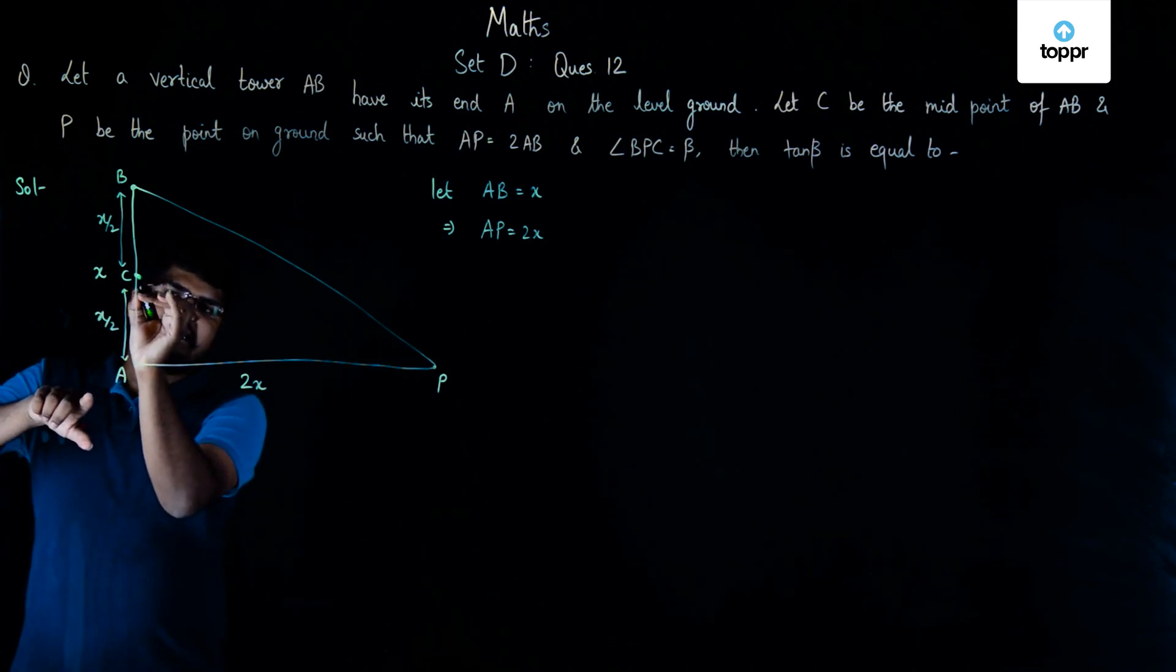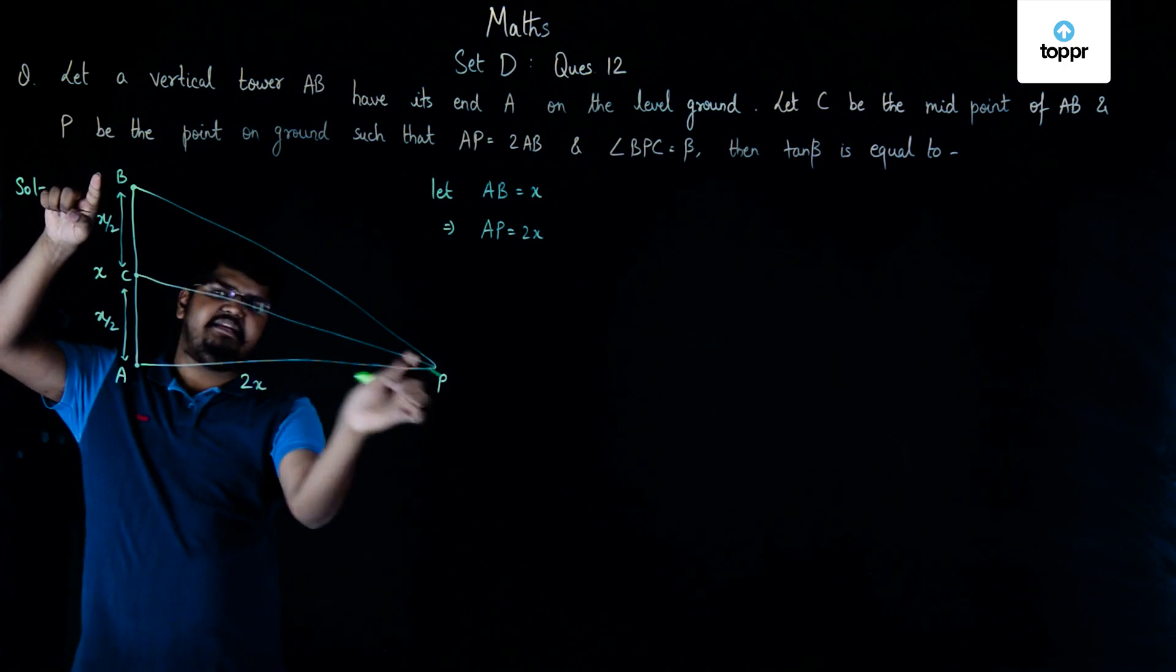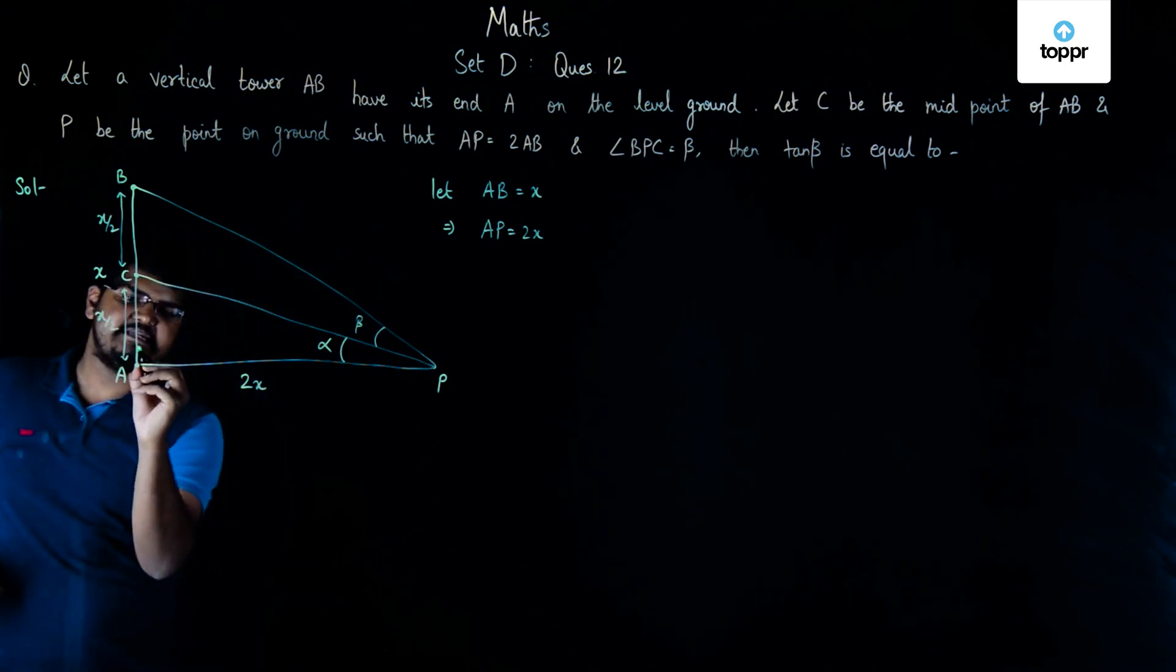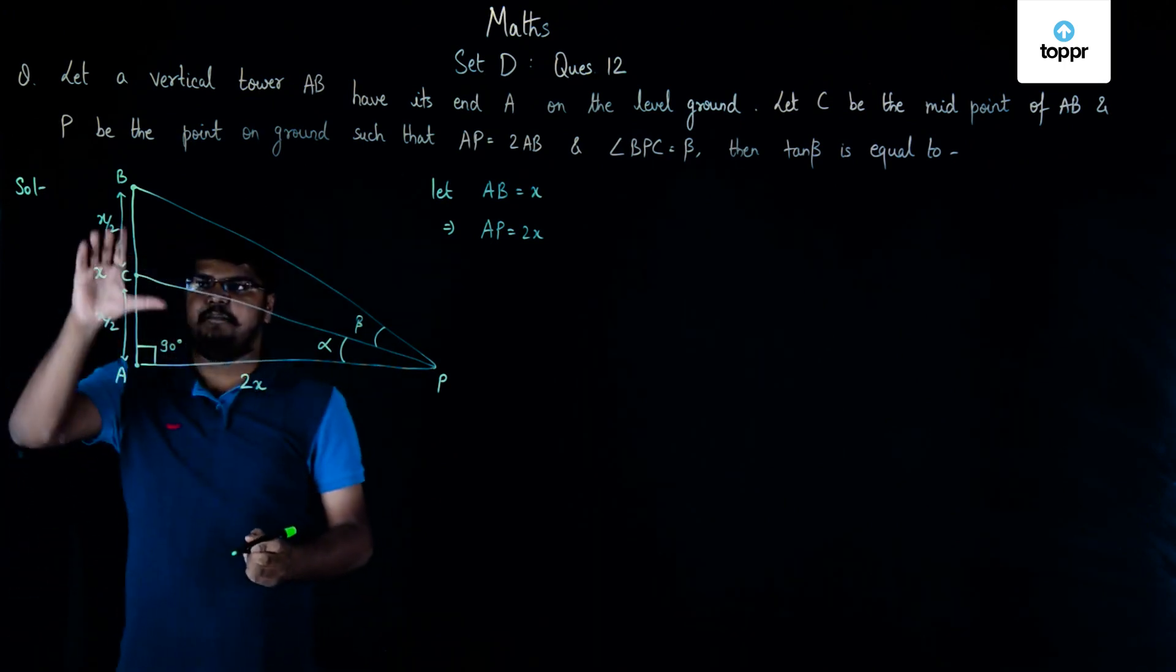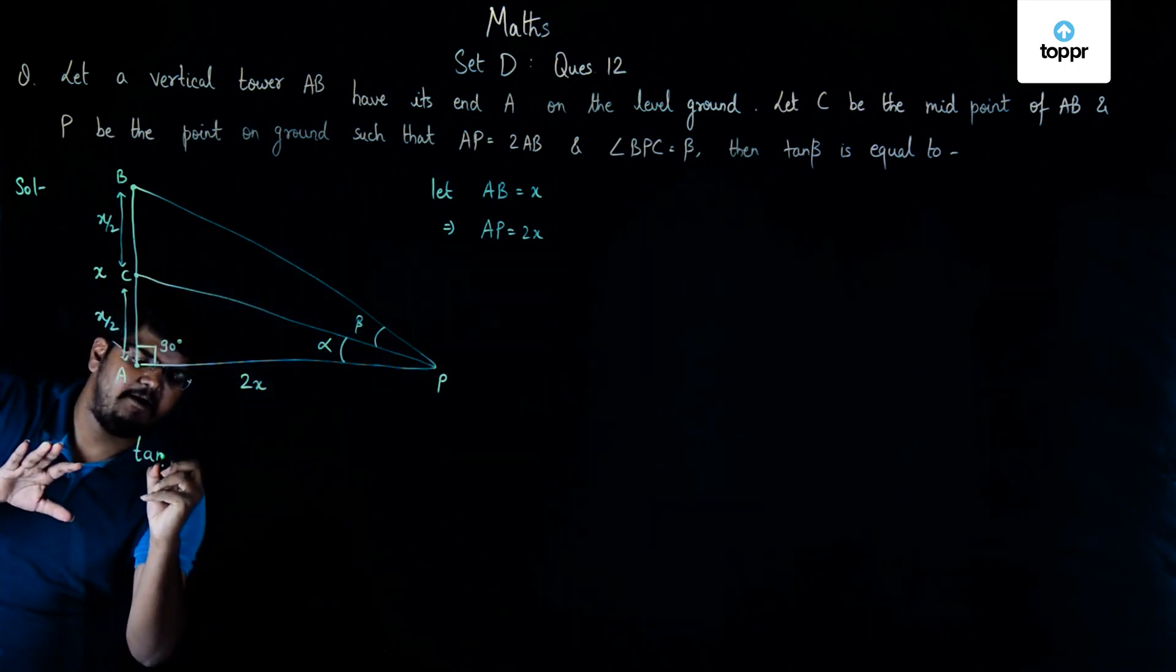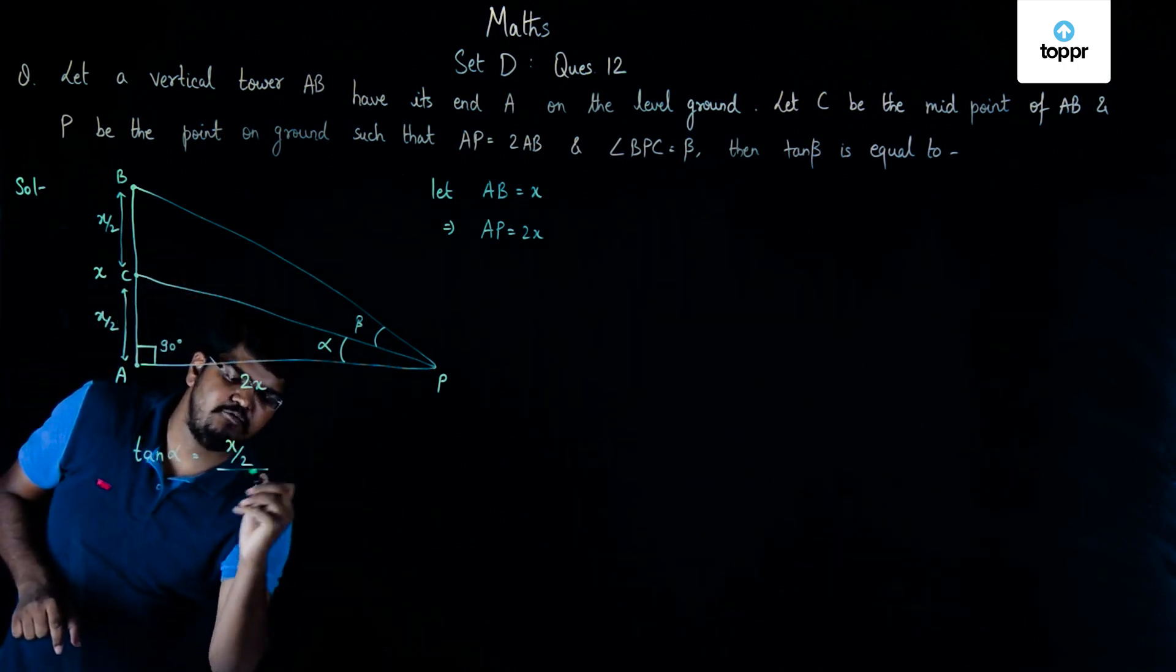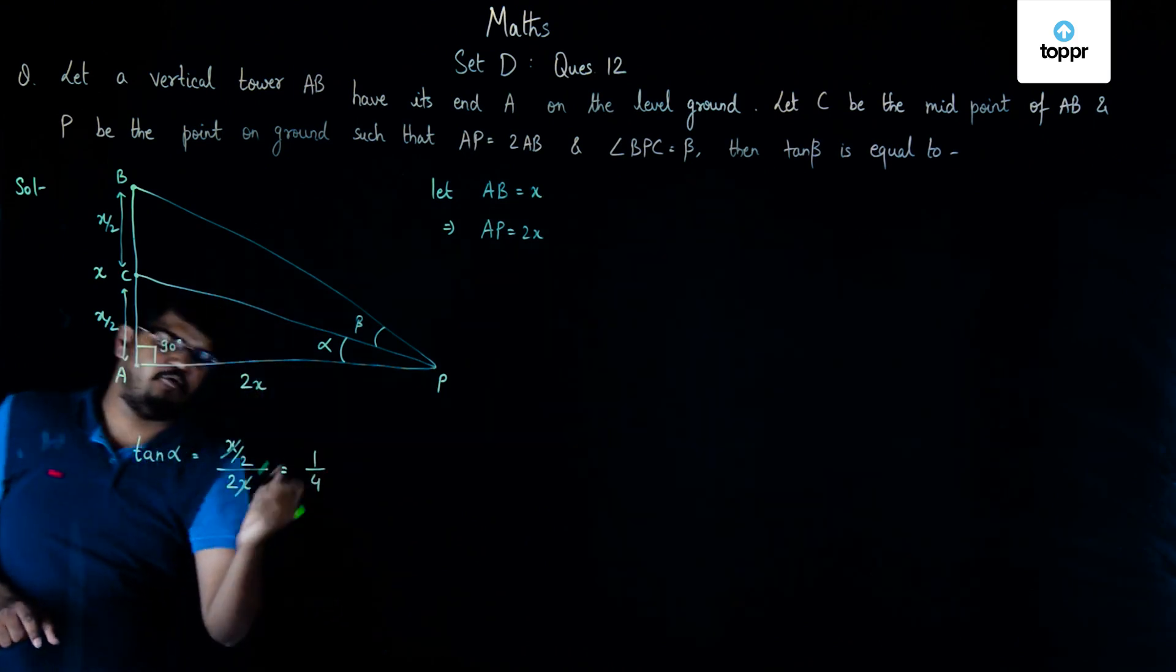Now, let's consider that angle BPC is angle beta and let's consider this angle as angle alpha. Now, since this is a vertical tower, so this means the angle is 90 degrees here and because of that we can say that tan alpha will be equal to X by 2 upon 2X, so X and X will cancel each other and we are going to get 1 by 4.